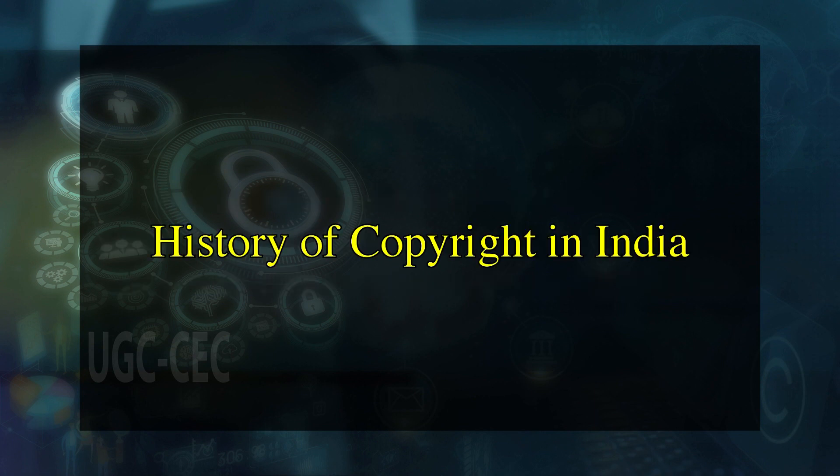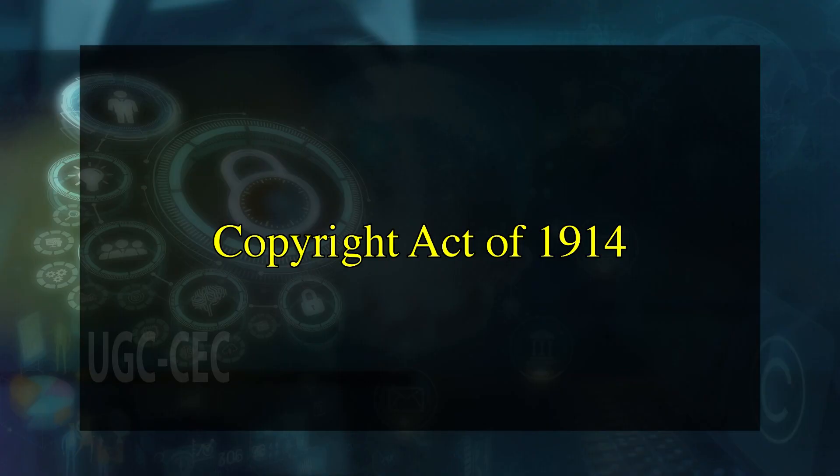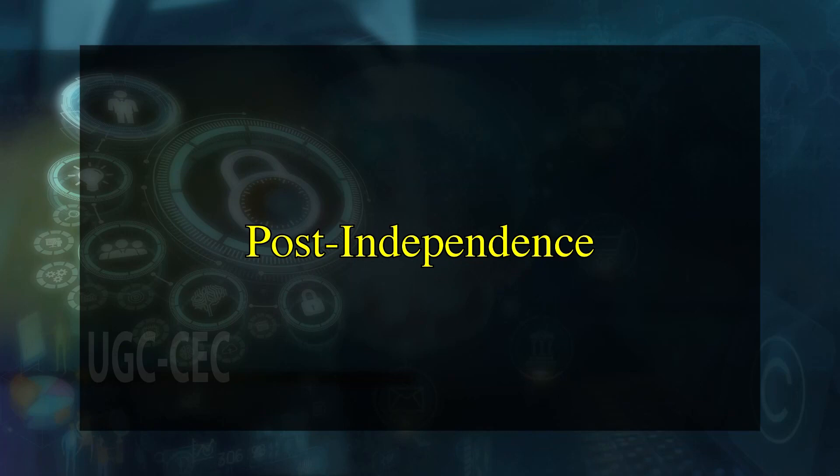India's copyright history reflects a continuous effort to balance creator rights with evolving demands of technology and global standards. Colonial era (till 1947): The Copyright Act of 1847 during British rule laid early foundations for copyright protection, albeit limited. The Copyright Act of 1914 significantly expanded copyright protection, covering a broader range of creative works until India gained independence in 1947. Post-independence: The Copyright Act of 1957 replaced the 1914 Act, aligning with international copyright standards and introducing economic and moral rights for authors.